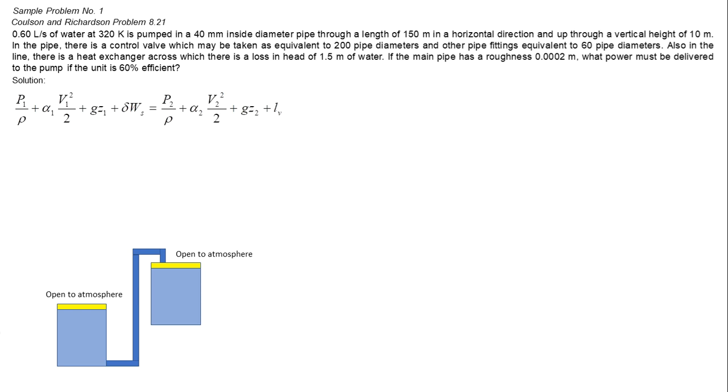Otherwise stated in the problem, let's assume that both the tanks are open to the atmosphere, so pressure on both sides will be cancelled. The height difference between liquid levels is 10 meters. Z1 will be 0 and Z2 is 10.